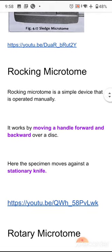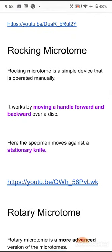Next is the rocking microtome. The rocking microtome is a simple device operated manually. It works by moving a handle forward and backward over a disc. Here the specimen moves against a stationary knife — unlike the sledge microtome where the knife moves and the specimen is stationary.